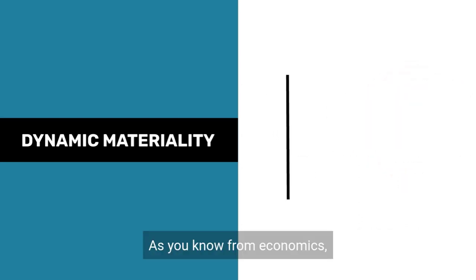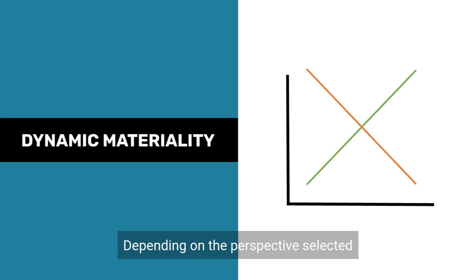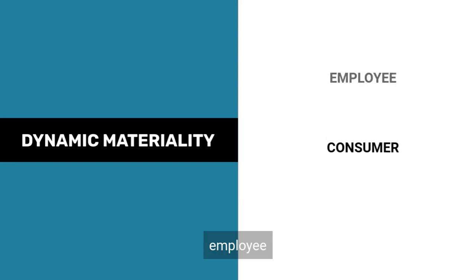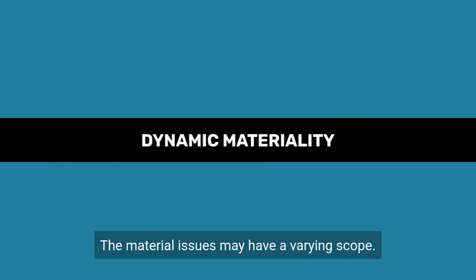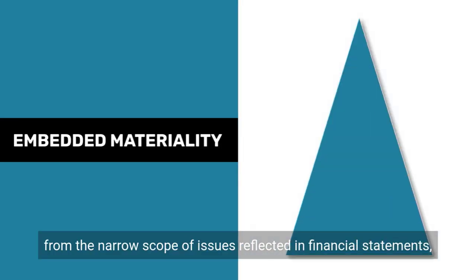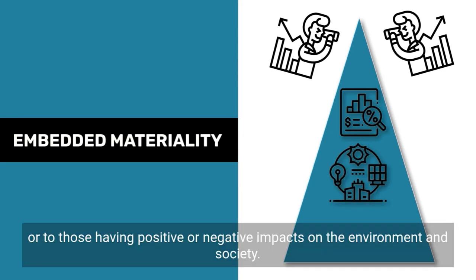As you know from economics, scarce resources have an impact on their price and affect companies' cost. Depending on the perspective selected — such as investor, consumer, employee, or civil society — the material issues may have a varying scope. This is referred to as embedded materiality. For example, from the narrow scope of issues reflected in financial statements to the broader scope of issues affecting enterprise value, or to those having positive or negative impacts on the environment and society.